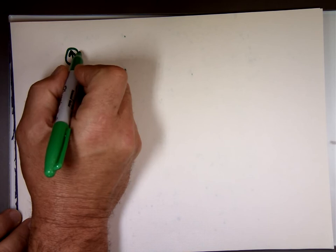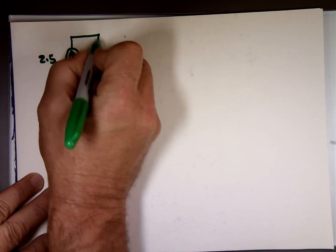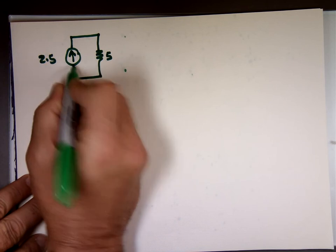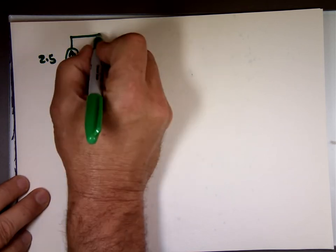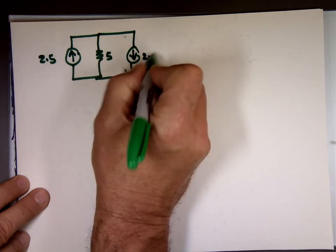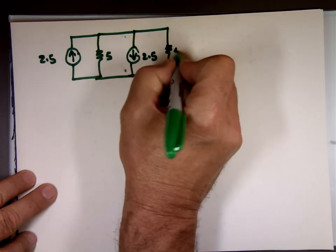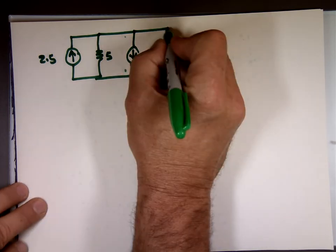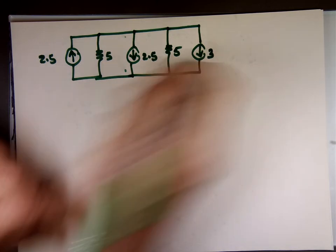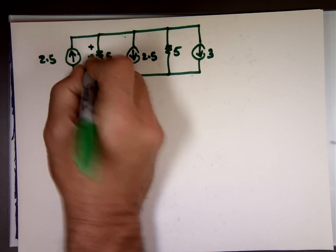So let's say we have this problem. 2.5 amps, 5, 2.5 amps, 5, pointing down. 5. And 3 amps. And let's say I want to find the voltage across the resistor. What's V here? They all connected in parallel.